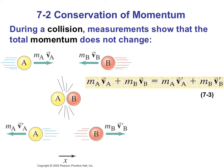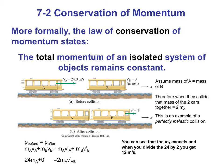Note here there are two objects before and two objects afterwards. This slide is an example of a perfectly inelastic collision. This will be explained later on in this presentation.